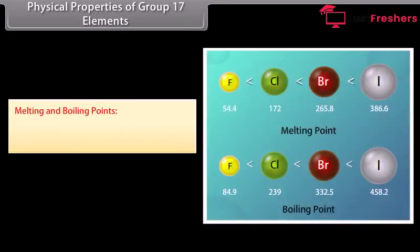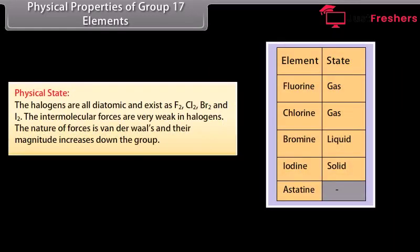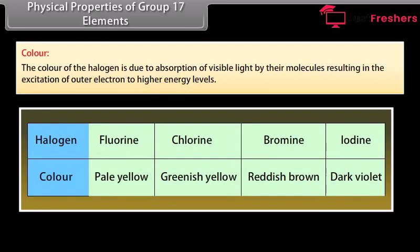Melting and boiling points increase with increase in atomic number, indicating that the strength of intermolecular forces of attraction increases with atomic number. The halogens are all diatomic and exist as F2, Cl2, Br2 and I2. The intermolecular forces are Van der Waals, and their magnitude increases down the group. Thus, F2 and Cl2 are gases, bromine is a volatile liquid and iodine is a volatile solid. The color of halogen is due to absorption of visible light, resulting in excitation of outer electrons to higher energy levels; the color deepens down the group.